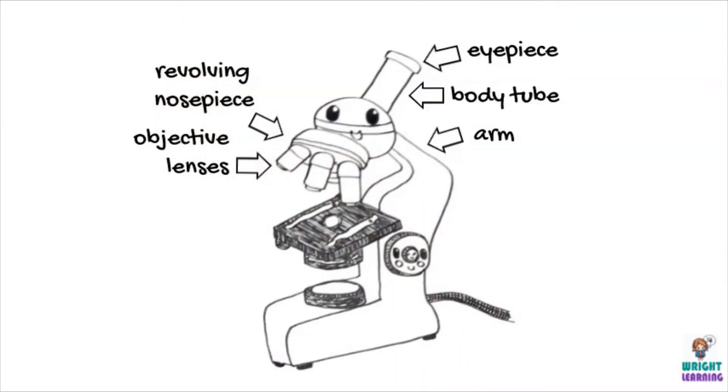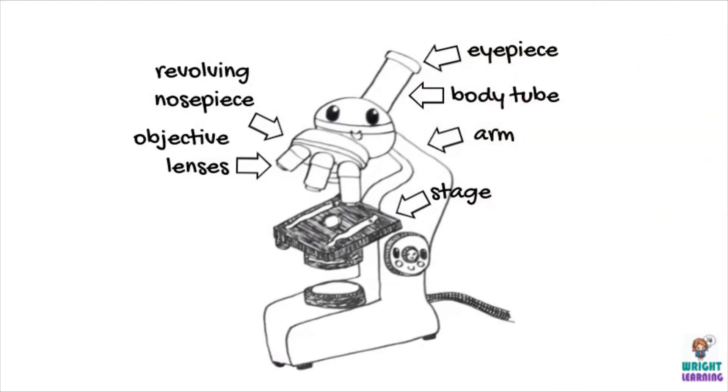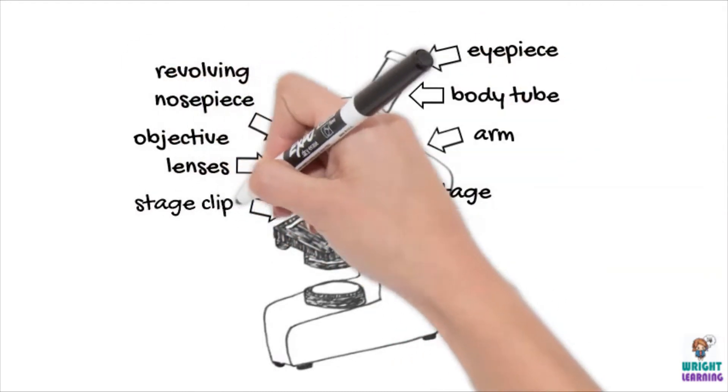The place that you put your microscope slide with your sample on it is called the stage, which has stage clips to keep the microscope slide in place.